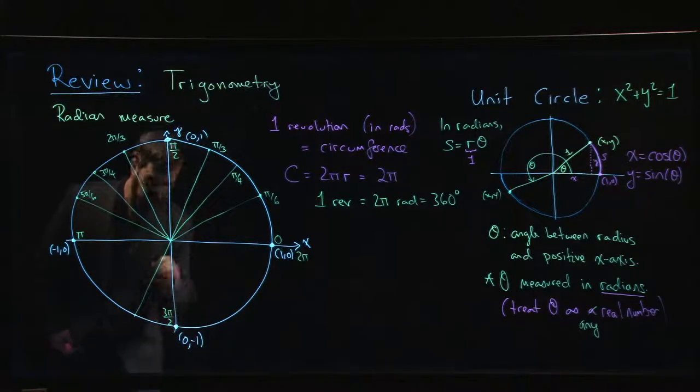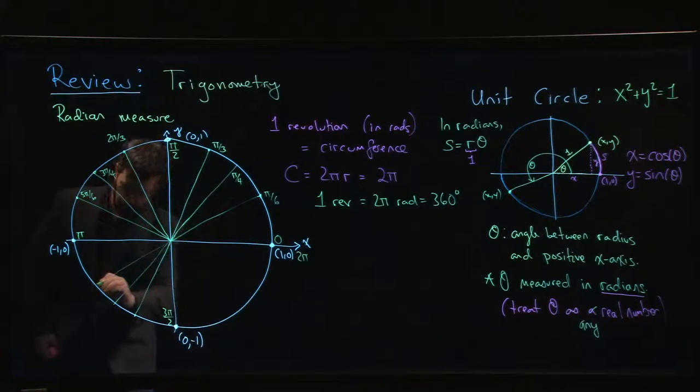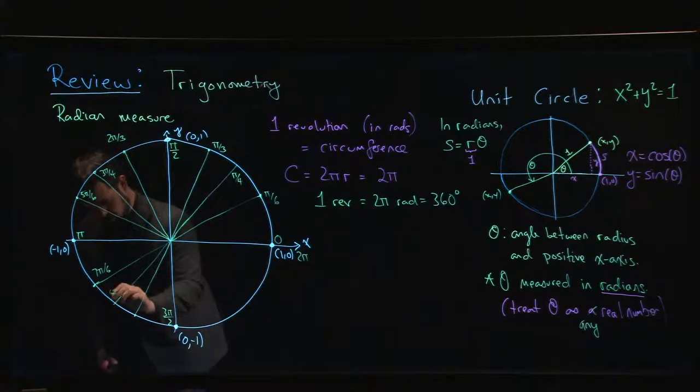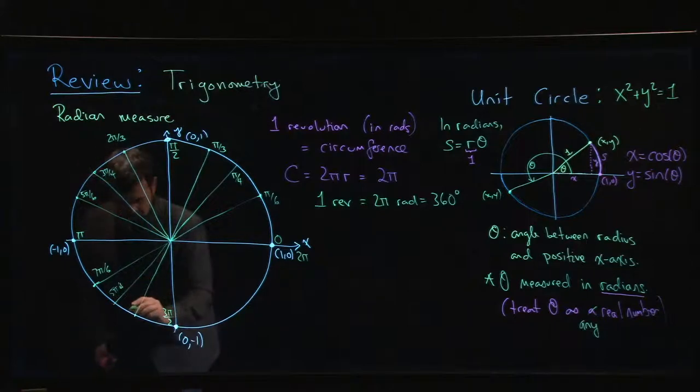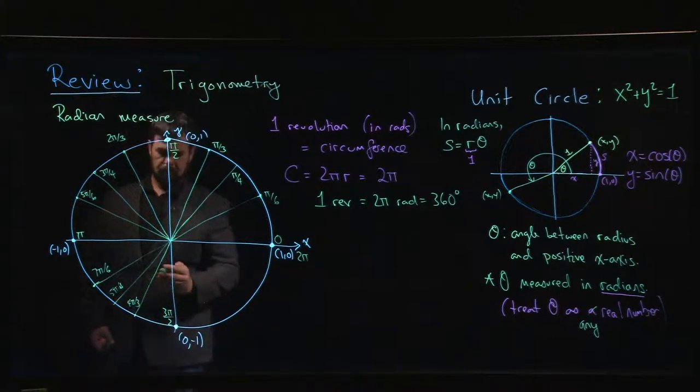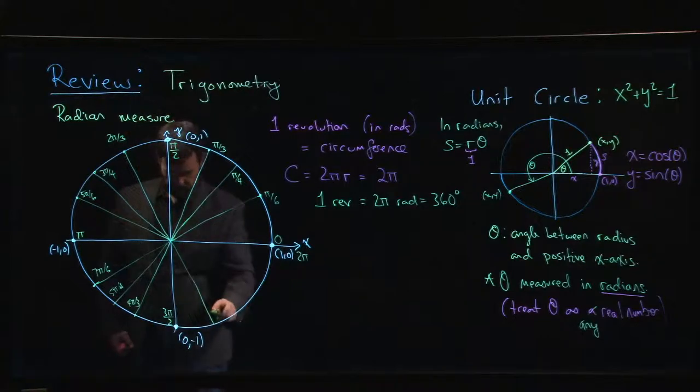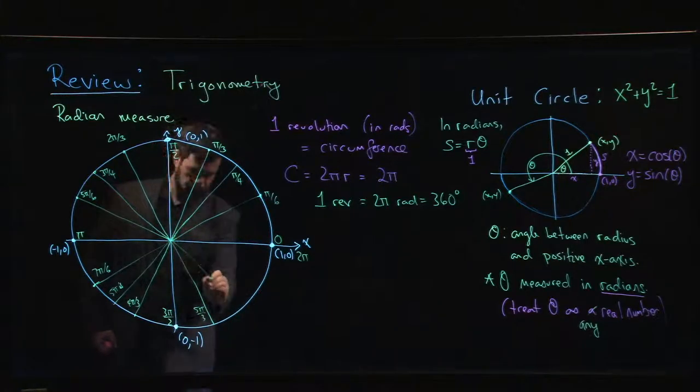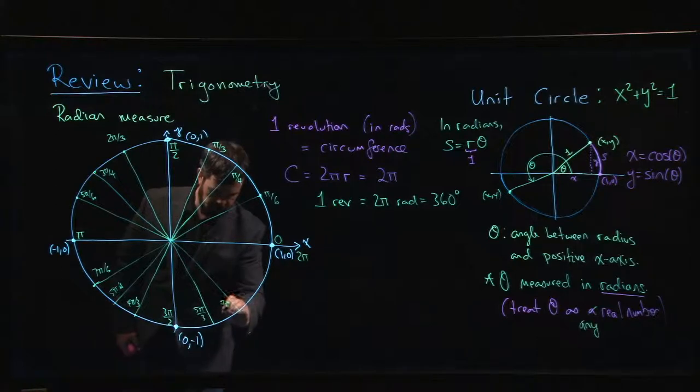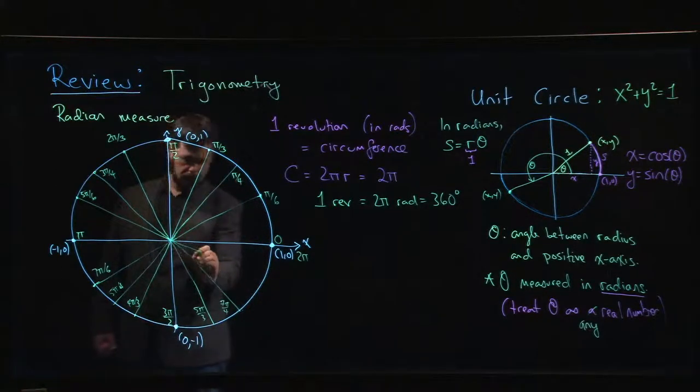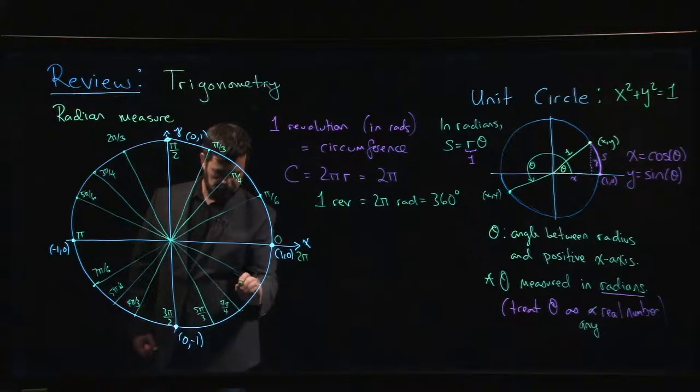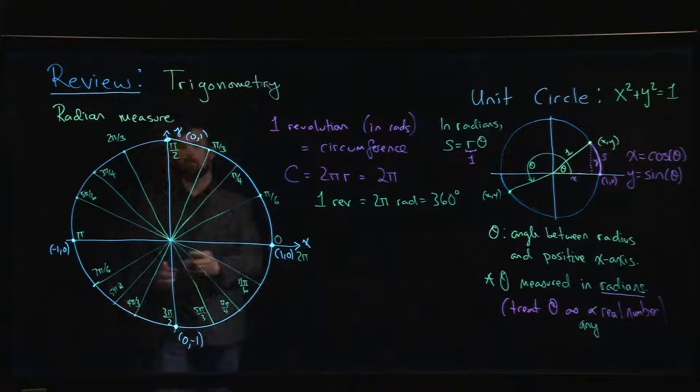We can extend these two diameters like so: 7π/6, this is going to be 5π/4, this is going to be 4π/3, 3π/2, this is 5π/3, 7π/4, and finally 11π/6.